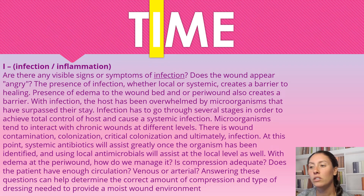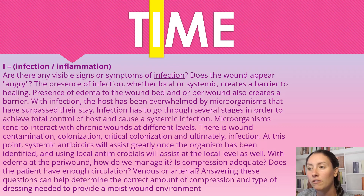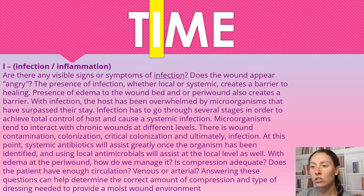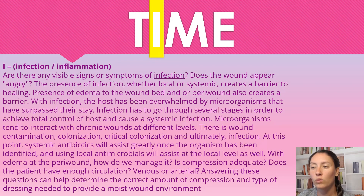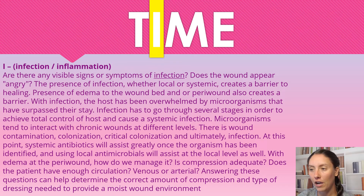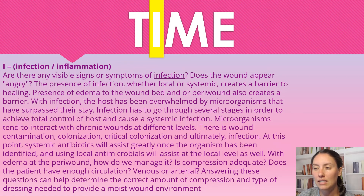With infection, the host is overwhelmed by microorganisms that surpass their stay. Infection goes through several stages to achieve total control of the host and to cause systemic infections. Microorganisms tend to interact with chronic wounds at a different level. There is contamination, colonization, critical colonization, and ultimately infection. At the point where it actually gets to deep spreading infection, you need an antibiotic.